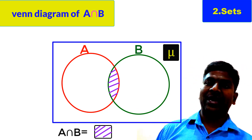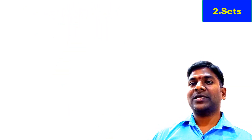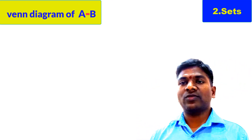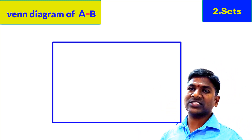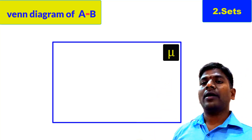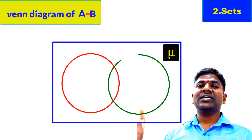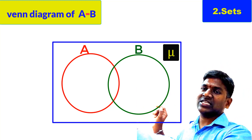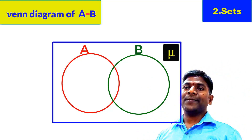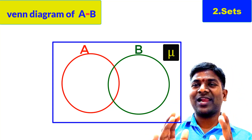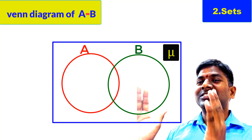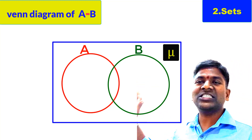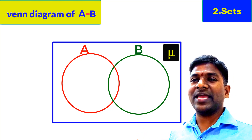The shaded common part is A intersection B. Whatever elements are in this shaded region are the elements of A intersection B. Below the Venn diagram we write A intersection B with the shaded square, and the elements in the shaded area belong to A intersection B. This is the representation of A intersection B by Venn diagram. Now let us represent the difference of sets by Venn diagram — heading: A minus B Venn diagram. As usual we draw a rectangle representing the universal set with symbol mu in the right top corner.